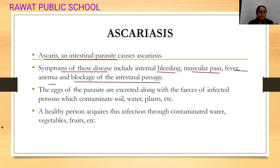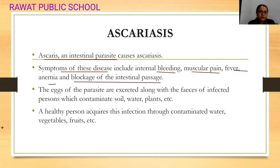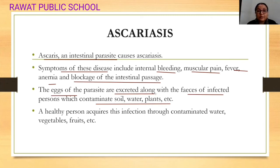Now let's talk about how transmission happens. Fecal discharge should not happen in open areas — it should be in a closed area with proper disposal. The eggs of the parasite are excreted along with the feces of the infected person, which contaminate water, soil, and plants. All fruits, vegetables, and food products become contaminated. If a healthy person ingests the contaminated food, the body will be infected with Ascaris.